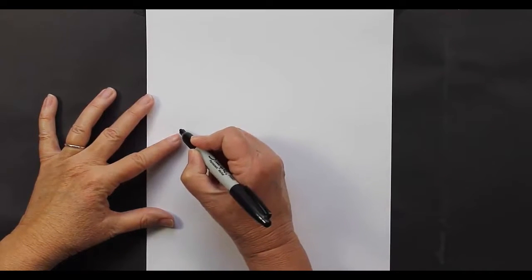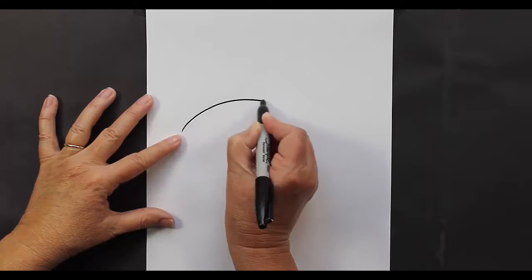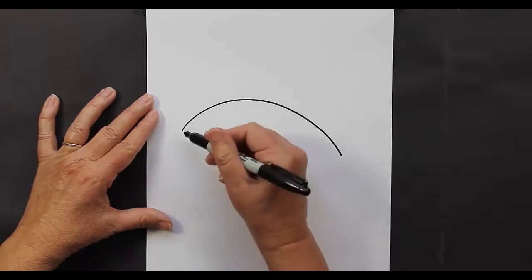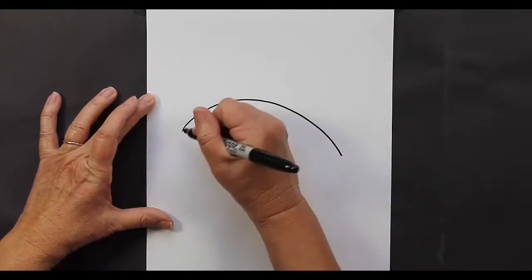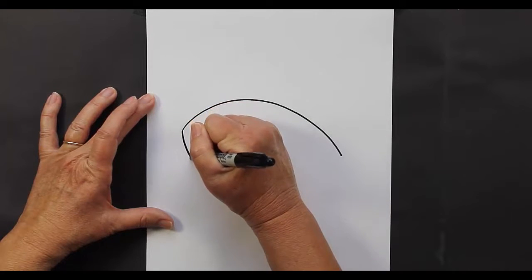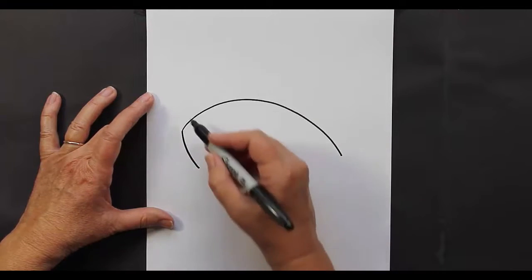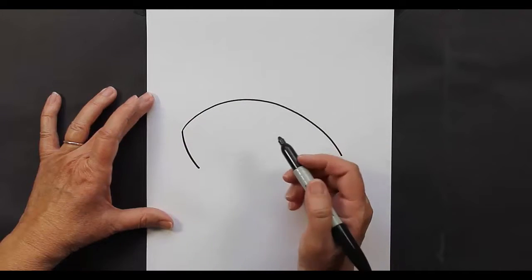We are going to start out with a curved line just like that. Now coming back up to this part of the curved line we're going to make it pretty straight, maybe like a slightly curved line. This is going to be the front part of his face.